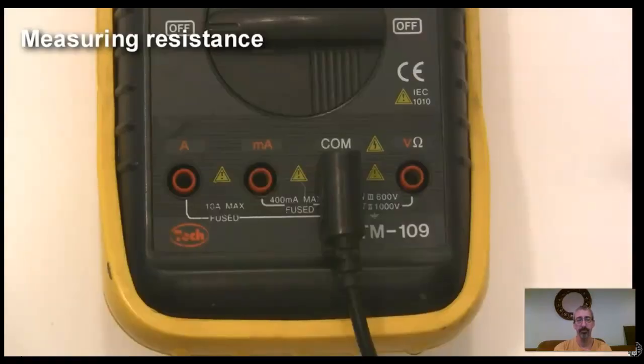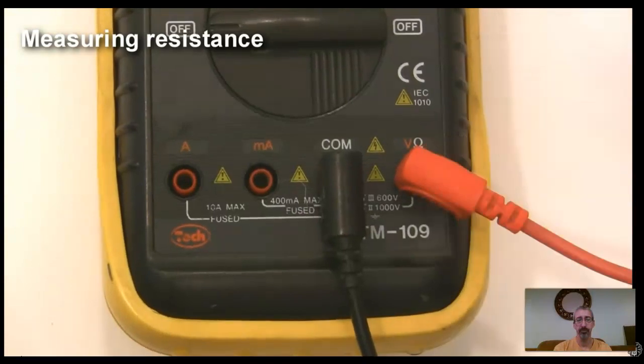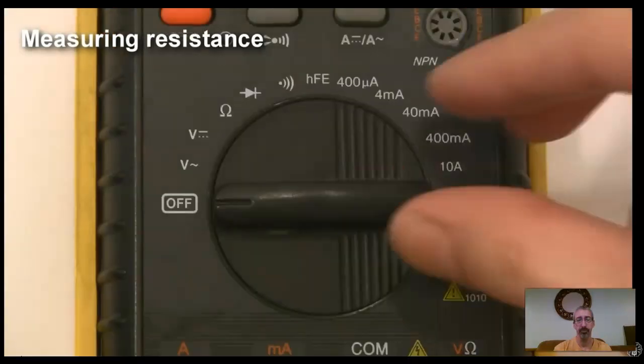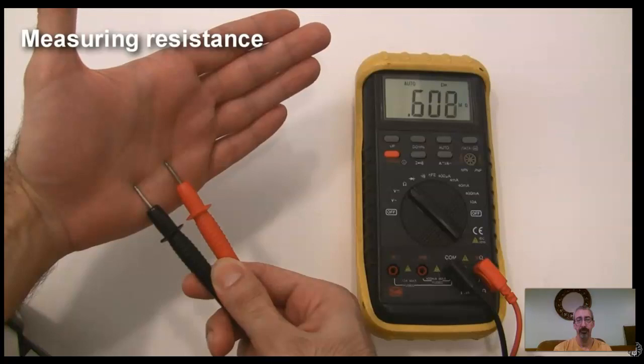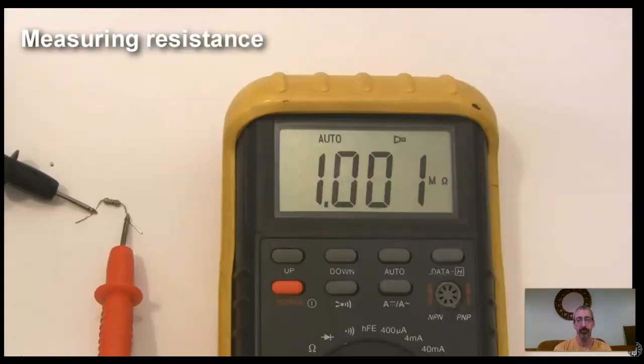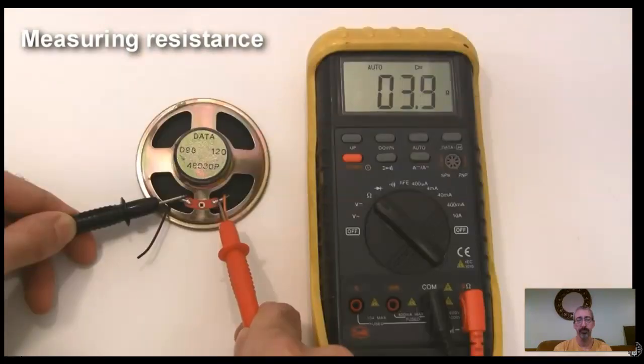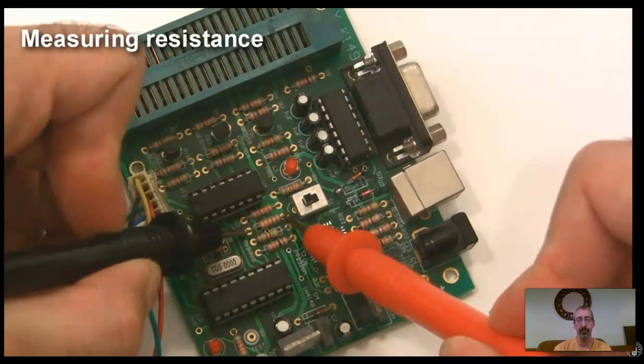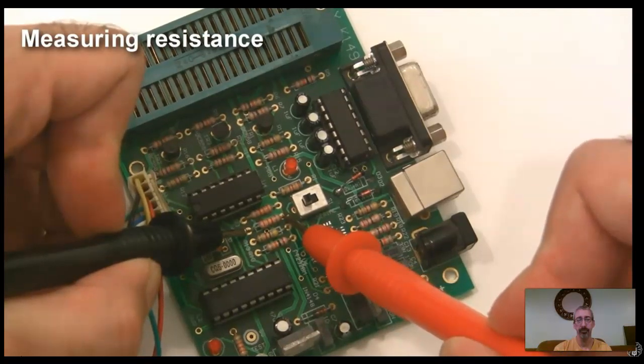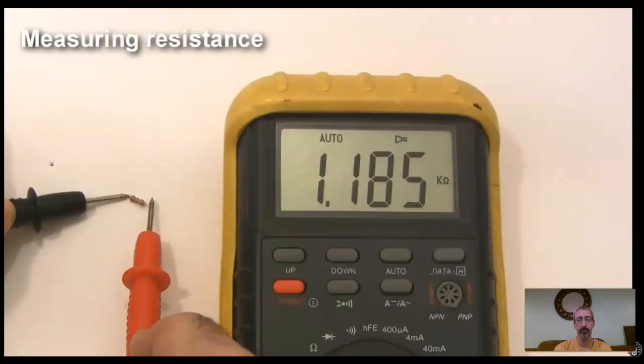Measuring resistance is easy too. Make sure the red lead is in the jack labeled ohms for resistance, and set the dial to the resistance setting. Here is me measuring the resistance of the skin on my hand. Here's me measuring the resistance of a resistor, and here I am measuring the resistance of a speaker. Now you might be wondering if you can measure the resistance of something in a circuit. Well, unfortunately it most likely won't work. You're going to have to remove the resistor from the circuit before measuring it.